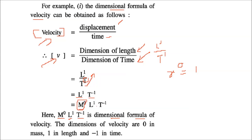The dimensions are the powers. So the dimension of mass in velocity is 0, length is 1, and time is minus 1.